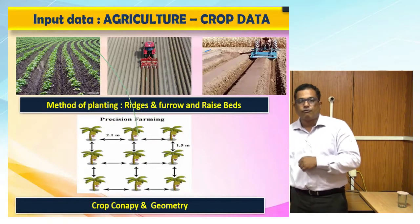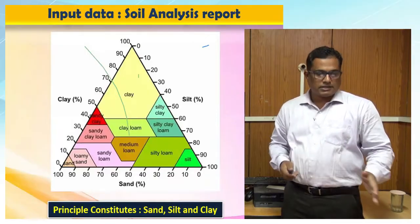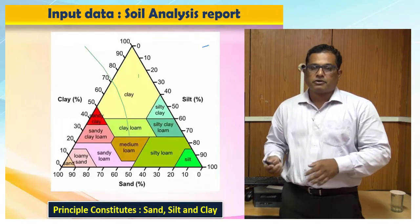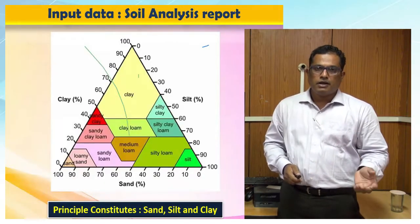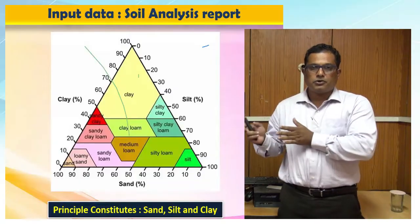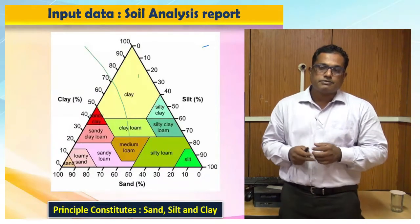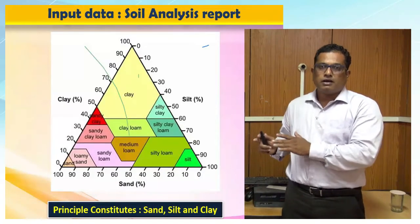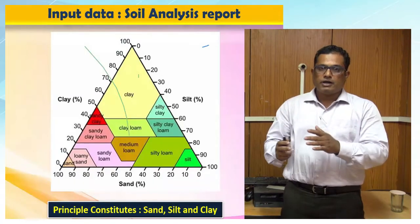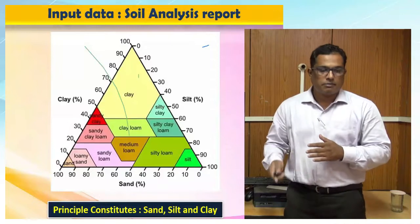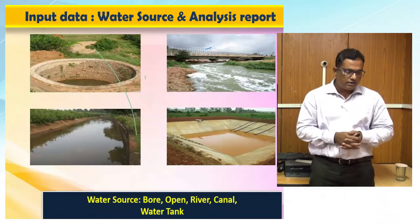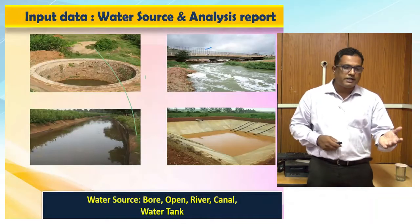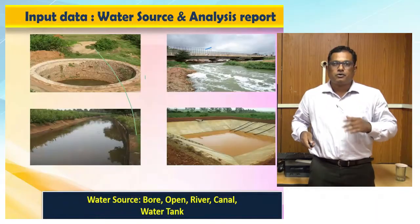Soil texture classification — sandy, silt, or loam — can be determined by physical verification and guides decisions on lateral arrangement (single row vs. paired row). Chemical analysis should include at minimum EC, pH, NPK, and organic carbon. Water source type — river, pond, lined pond, or borewell — should be identified, and water quality testing conducted to determine the appropriate filtration unit.